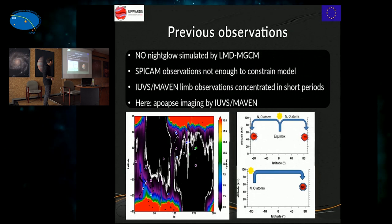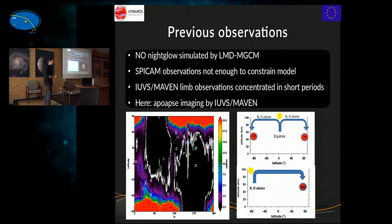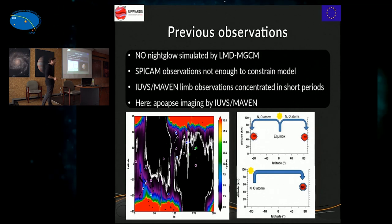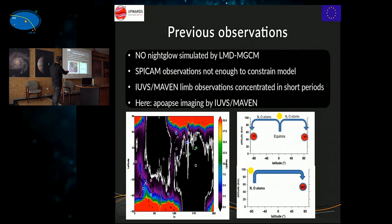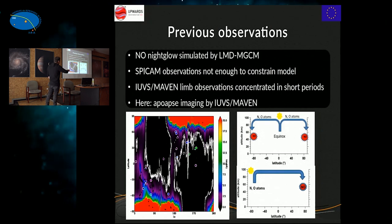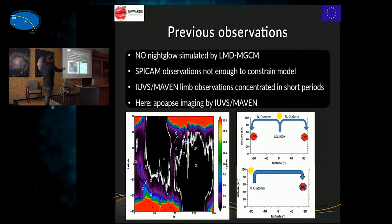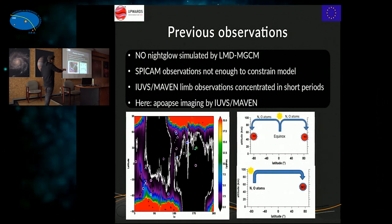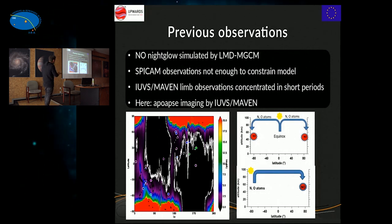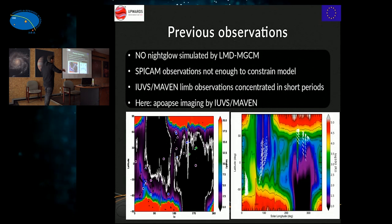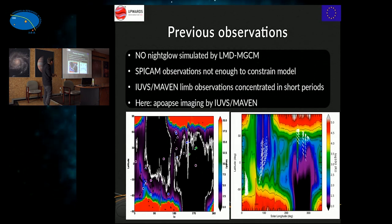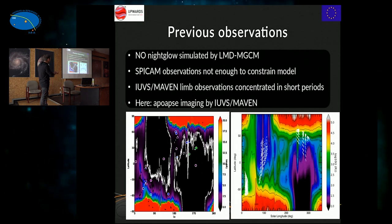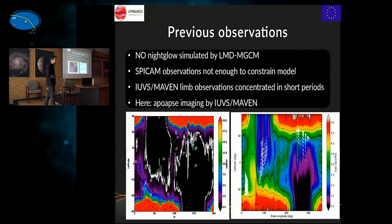After these first observations, we incorporated into the GCM a new model to calculate the nightglow and to see what could be seen in a Martian year. The model predicts a very strong emission in the winter poles during solstice seasons — because the circulation goes from the summer hemisphere to the winter hemisphere. During equinox seasons, the model creates strong emission in both poles — the circulation goes from low latitudes to high latitudes of both hemispheres — and there is also some emission at low latitudes.